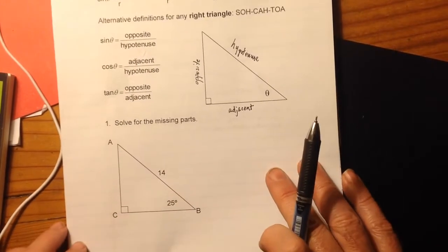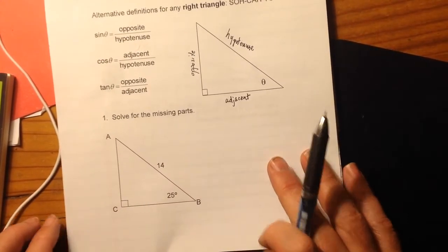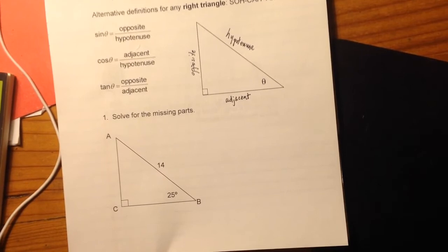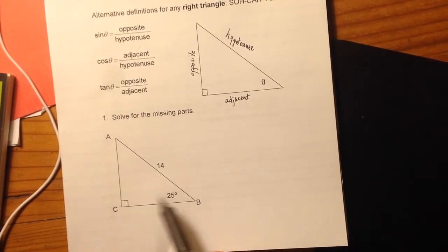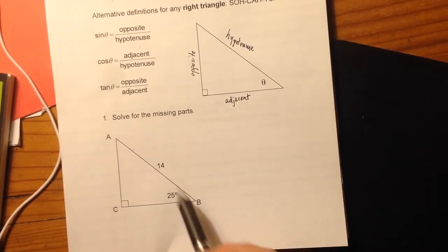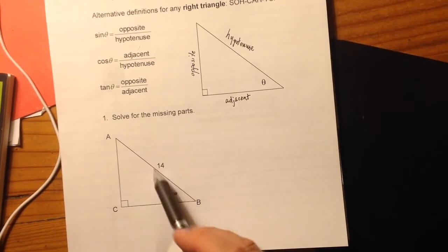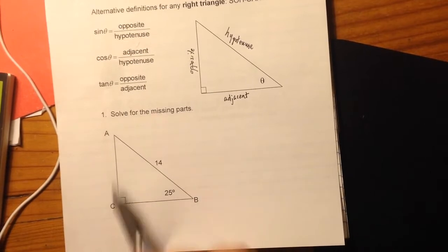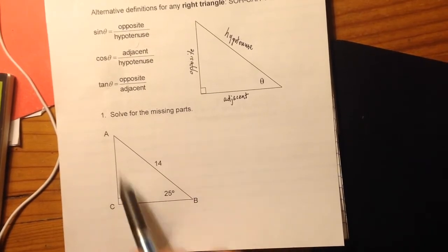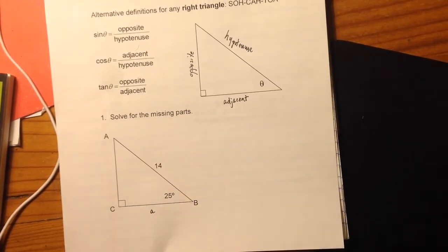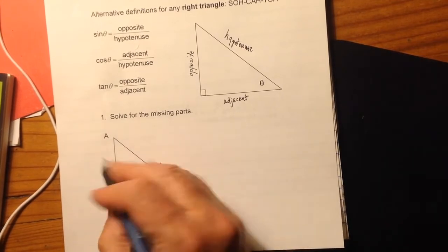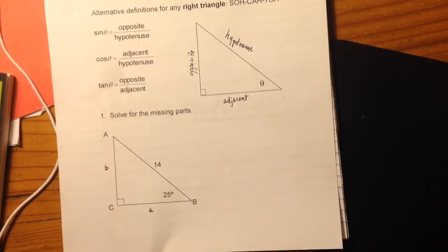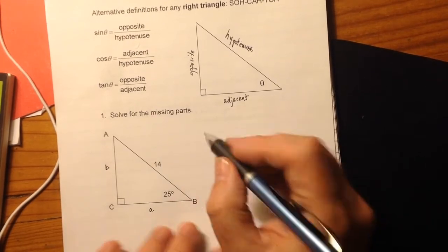So now let's look at the bottom of the page here. Number one, solve for the missing parts. We have the 90-degree angle, a 25-degree angle here for B, and we have that side C, the hypotenuse, is 14. So we need to solve for three things. We need to find angle A and then the side opposite A, which we usually call lowercase a, and opposite B, we'll call that lowercase b.